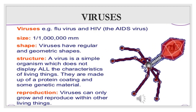Viruses — for example, the flu virus and HIV, which means AIDS virus. Shape: viruses have regular and geometric shapes. Structure: a virus is a simple organism which does not display all the characteristics of living things. Viruses are much smaller than bacteria — about 100 times smaller — so they cannot be seen under an ordinary microscope. Viruses are not cells; they are made up of a protein coating and some genetic material. Reproduction: viruses can only grow and reproduce within other living things. They take over a cell and make it produce more viruses.